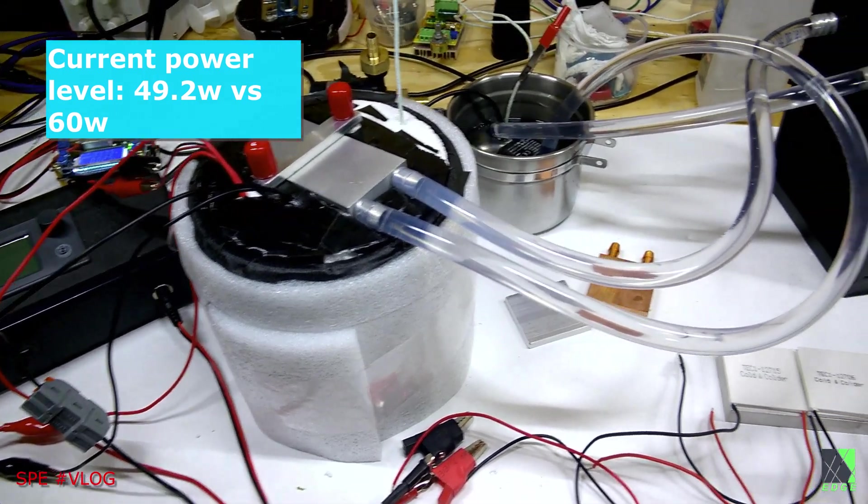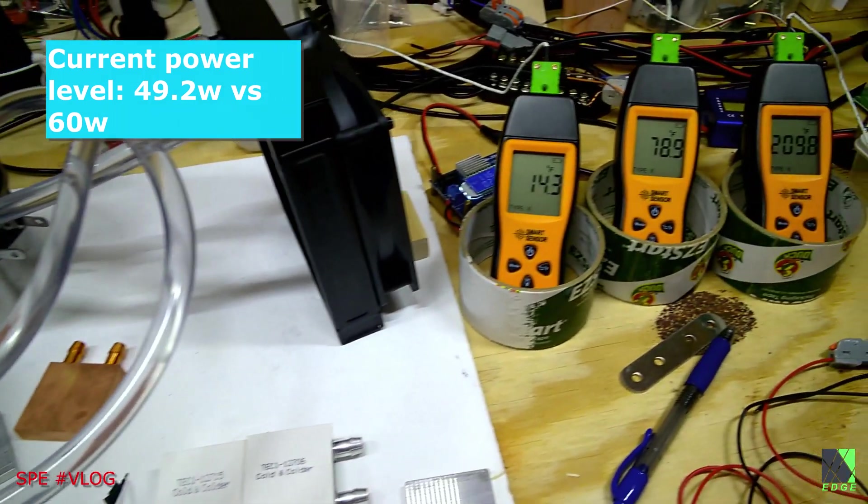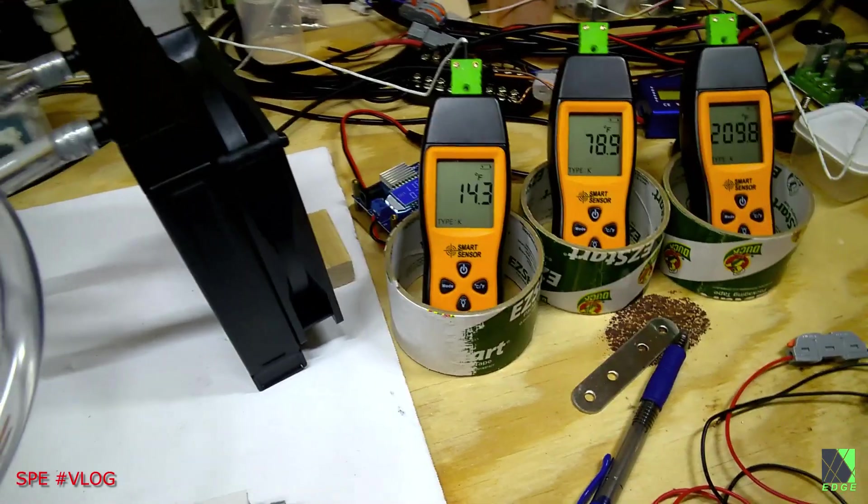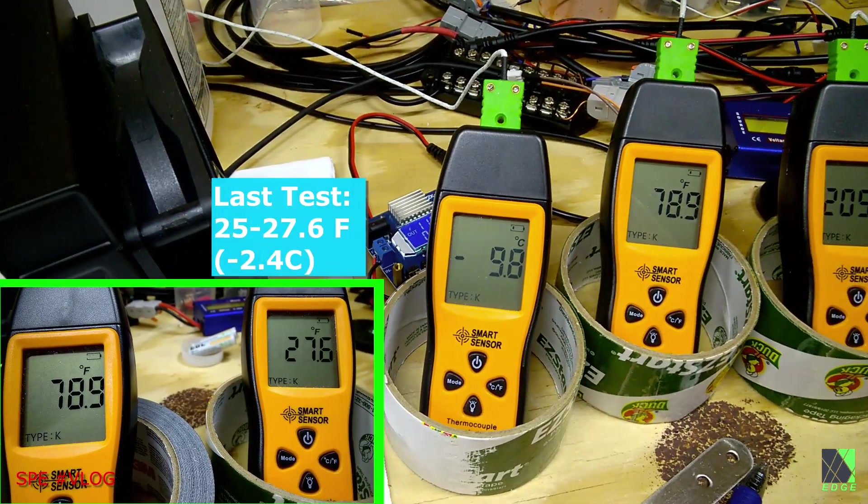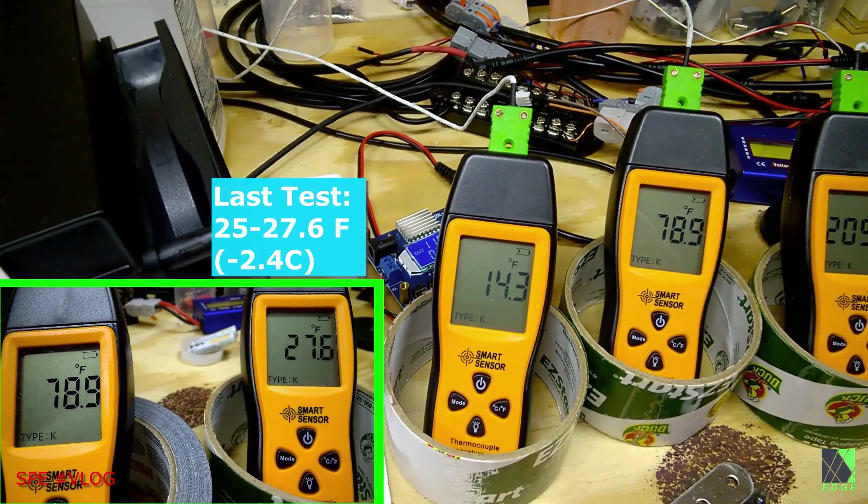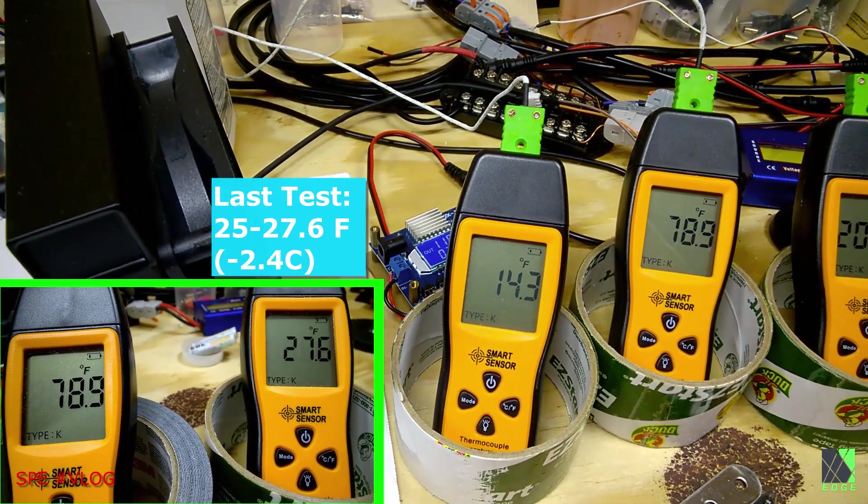This freezer currently has reached 14.3 degrees Fahrenheit. The Celsius readout is minus 9.8. That is much better performance than I was getting before.